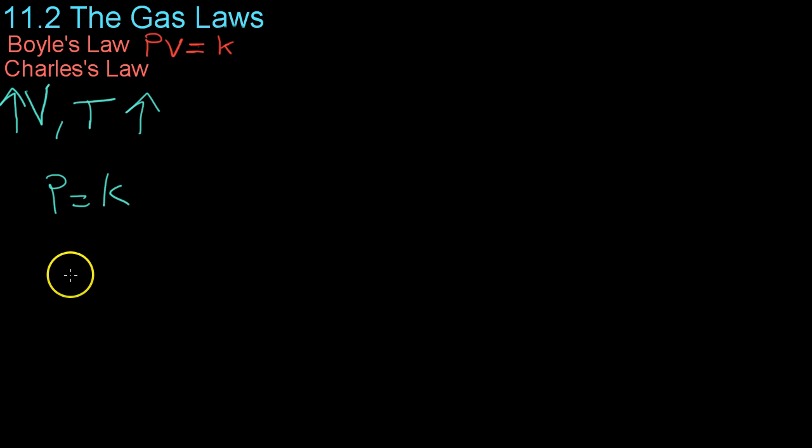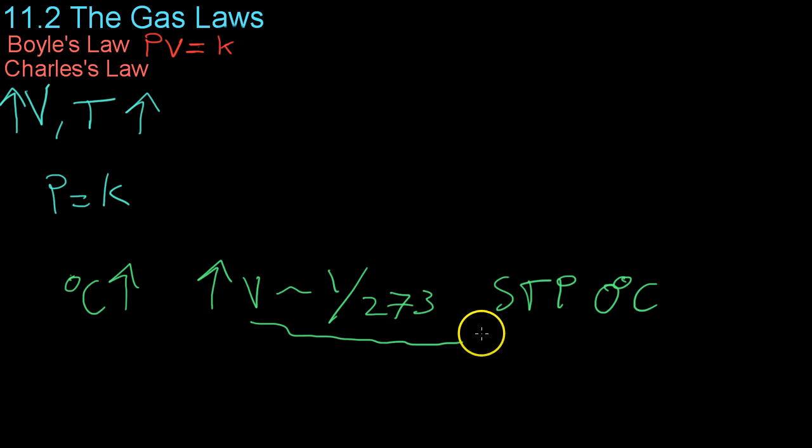Using close experimentation, he determined that for each degree Celsius that he increased the temperature, the gas rose in volume by about 1/273rd of its initial volume. And this was in reference to the gas's size at STP, that is, when it was at 0 degrees Celsius.